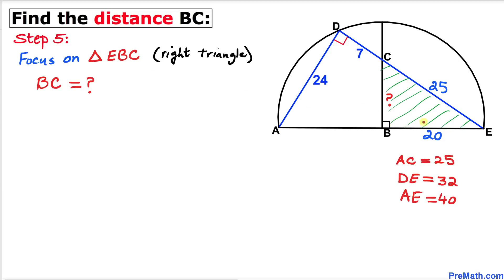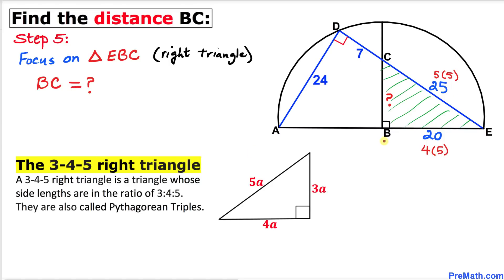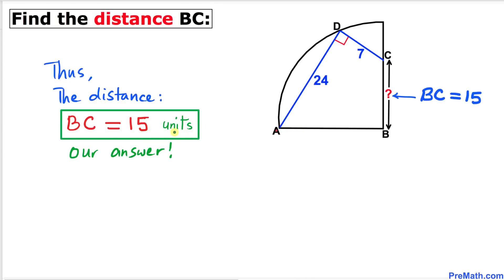For our final step, let's focus on the shaded right triangle EBC and find distance BC. Since BE = 20 = 4 × 5 and CE = 25 = 5 × 5, this triangle represents a 3-4-5 special right triangle. Therefore BC = 3 × 5 = 15 units. That's our final answer. Thanks for watching, and please don't forget to subscribe for more exciting videos!